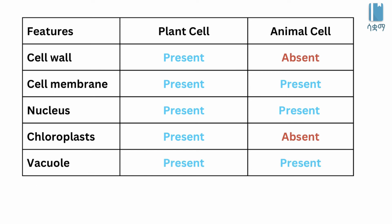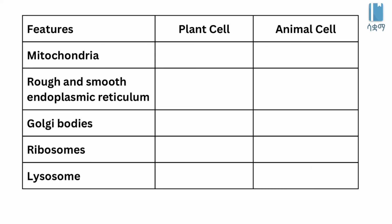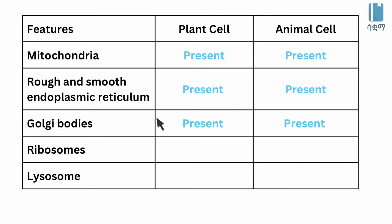Vacuoles: present in plant cells, present in animal cells as small vacuoles. Mitochondria: present in both plant and animal cells. Rough and smooth endoplasmic reticulum: present in both plant and animal cells.